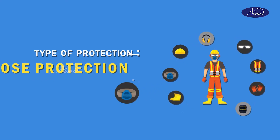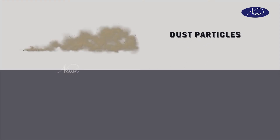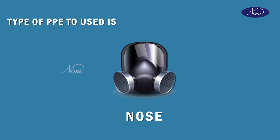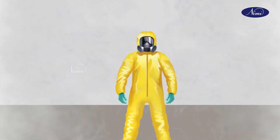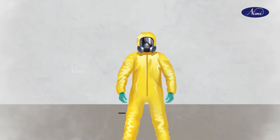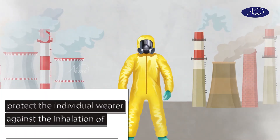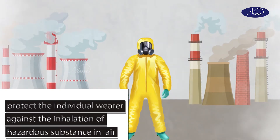Next protection is nose protection. The hazards are due to dust particles, inhaling fumes, gases, and vapors. The type of PPE to be used is a nose mask. Respiratory protection equipment is used to protect the individual wearer against the inhalation of hazardous substances in the workplace air.